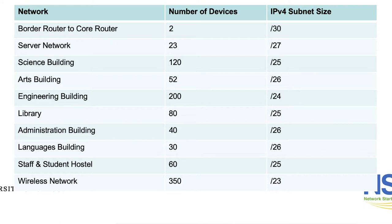For the science building you have 120 devices. In this case we're using a /25, which will give you 128 possible IP addresses with 126 usable IP addresses. So for the science building you can see that they will only have an additional six devices that they can add to the network in future.